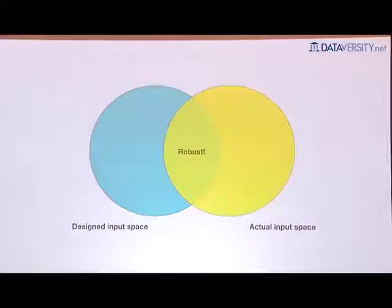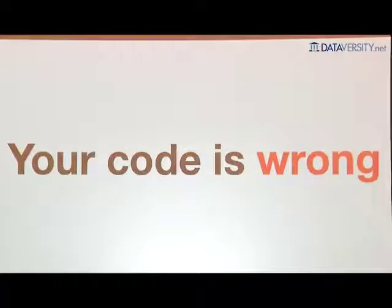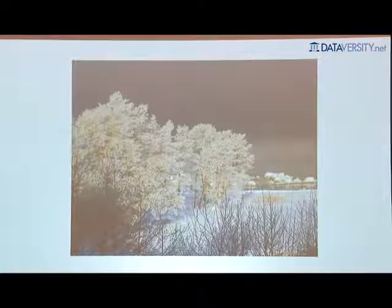By input space I mean more than just the arguments you pass into your functions — I also mean how often you call these functions and the context in which they're used. But that's not the only thing I mean when I say your code is wrong. I also mean your code is literally wrong — the logic itself is incorrect. Maybe I'm being presumptuous, because I've never seen your code and I've never met you. But I'm going to stick to it: your code is definitely wrong. This is just a fact of nature — it's impossible for your code to be completely correct.